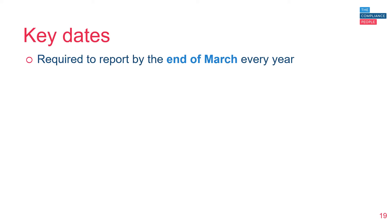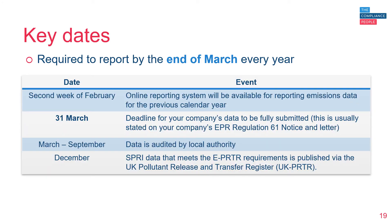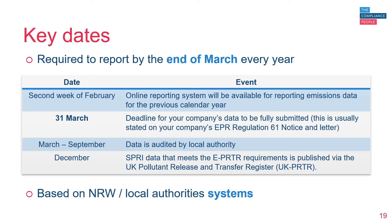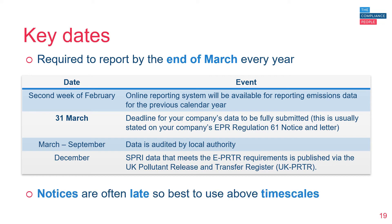Under the European Pollutant Release and Transfer Register regulation, member states are required to report data to the EPRTR by the end of March each year so the register website can be updated. The dates shown should be used as a rough guide, as they vary between regulators and when they want things submitted. This particular example is based on Natural Resources Wales reporting requirements, which use the same online system as local authorities for reporting. The regulator will send you a notice when the data is due, but this can often be issued late, so it's best to work to these timescales to ensure the data is ready. Essentially, you need to have the data completed by the end of March.